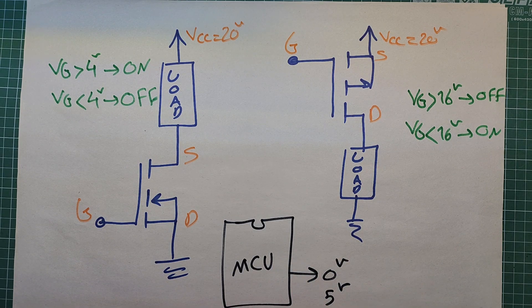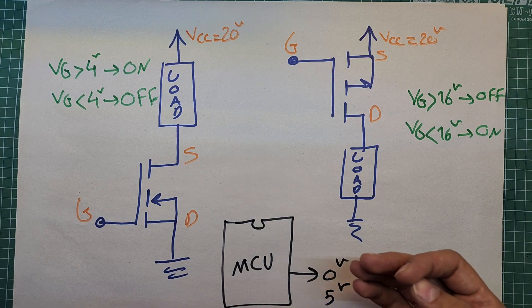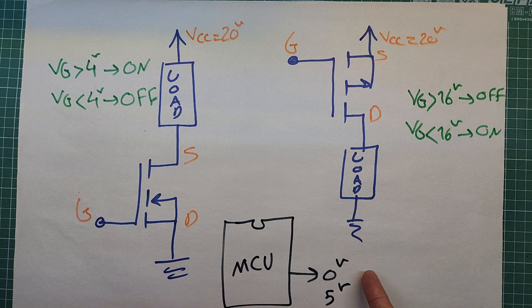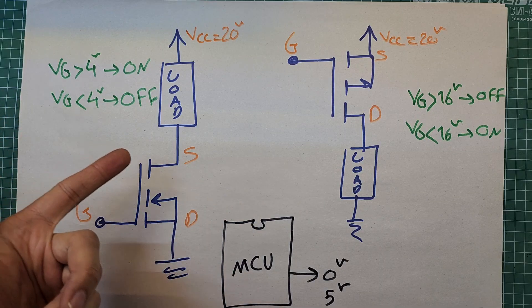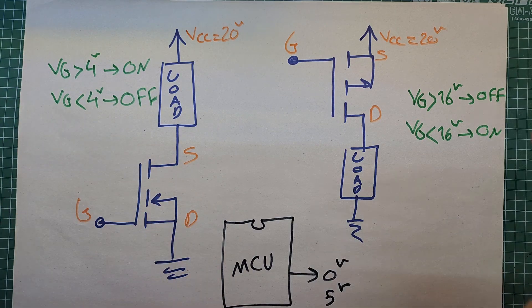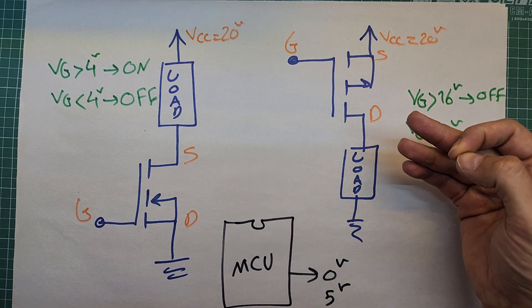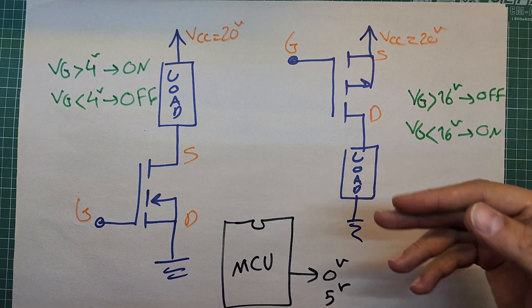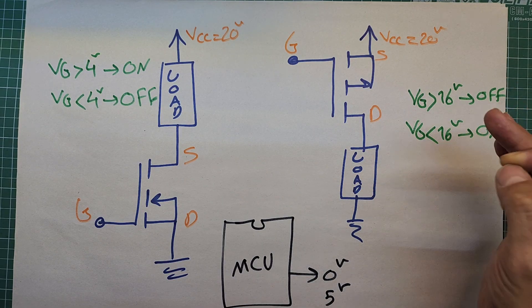Voltages like 0V and 5V are readily available on many microcontrollers like AVR families. In most cases you can drive an N-channel MOSFET directly using an MCU: 0V is lower than 4V and turns the transistor off, and 5V is higher than 4V and turns it on. For a P-channel with a 20V supply, you need voltages higher than 16V to turn it off — both 0V and 5V from an MCU will turn it on, so you cannot turn it off directly using MCU GPIO pins. More complex driving circuitry is required for a P-channel.